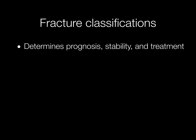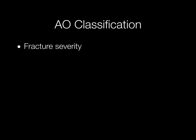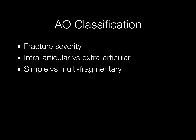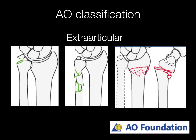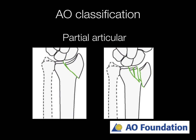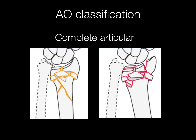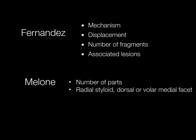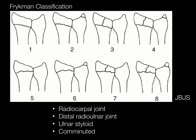Here's a word on fracture classifications. These can be helpful to determine prognosis, stability, and treatment, but there are numerous classification systems. The AO classification deals with the severity of the fracture — whether it's intra- or extra-articular, simple versus multi-fragmentary, partially intra-articular or completely intra-articular. There are other classifications based on mechanism, displacement, number of fragments, associated lesions, extension to the carpal joint or distal radial ulnar joint, and whether the ulnar styloid is involved.